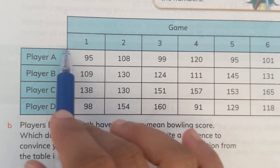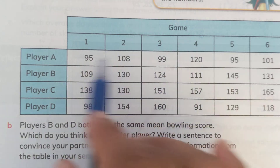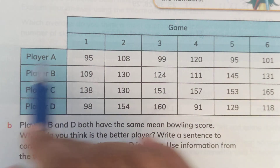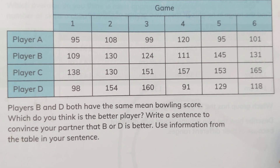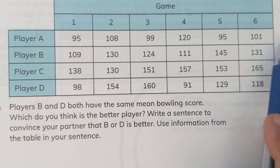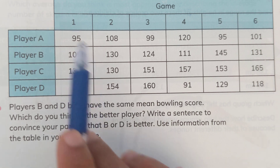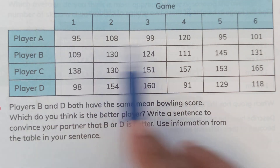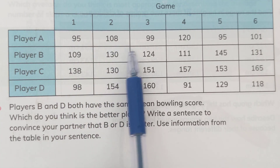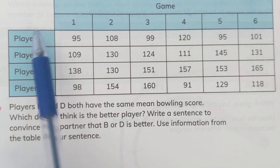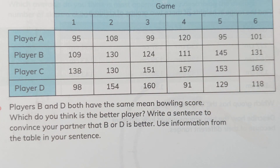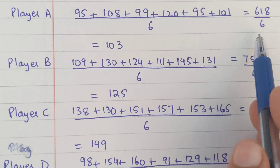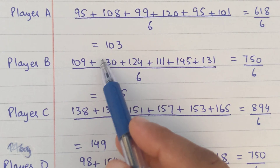They are playing bowling and have played 6 different games with altogether different scores. We have to find which bowler has the highest mean. For this, we take every bowler, add up all their scores, then divide by 6. For player A: 95 + 108 + 99 + 120 + 95 + 101 = 618, divided by 6 equals a mean of 103.